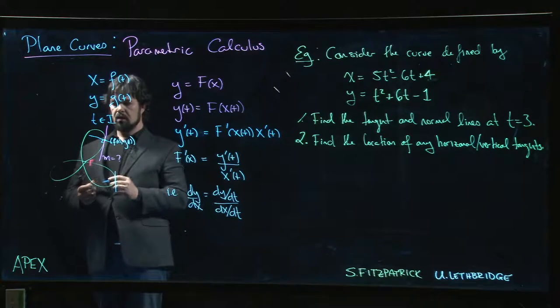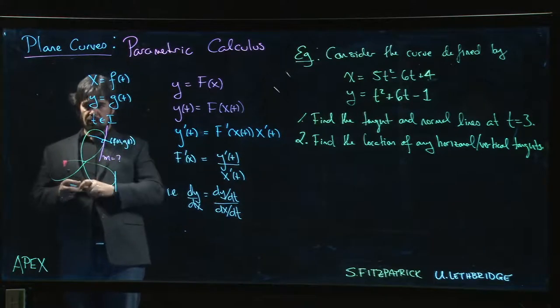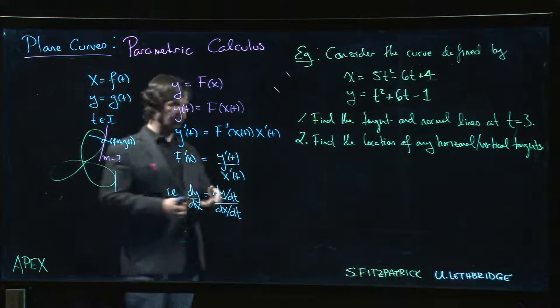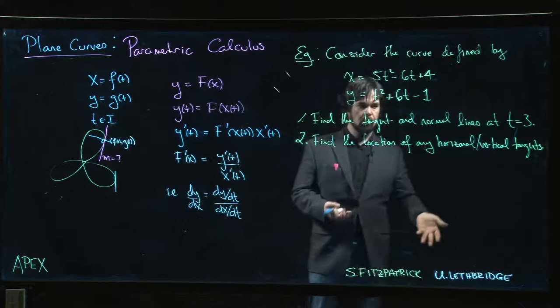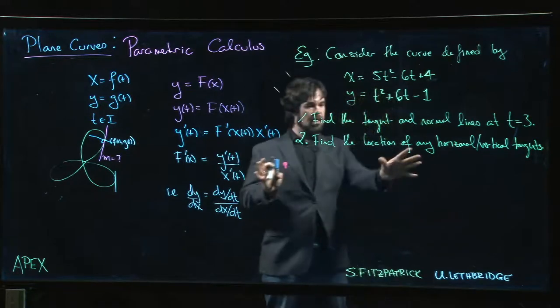We know that if you have two lines that are perpendicular, their slopes are negative reciprocals. So once we know the slope for the tangent line, minus one over that slope gives me the slope for the normal line. So we can do both of those.